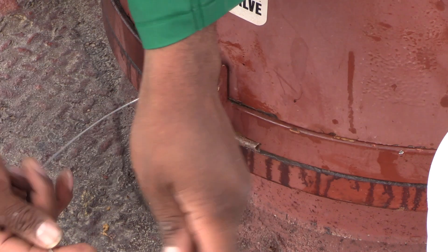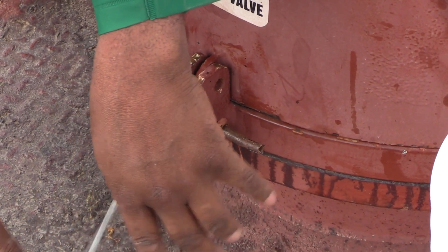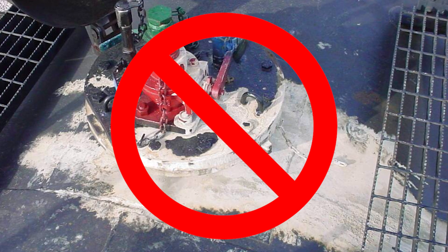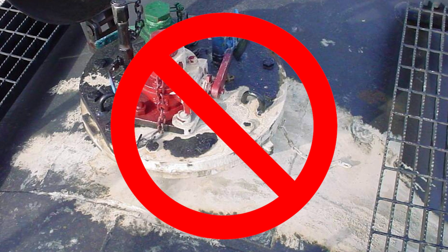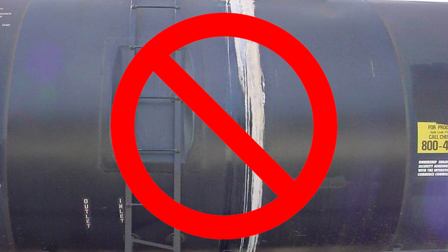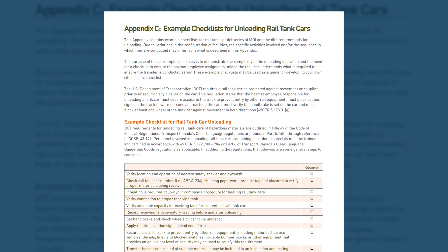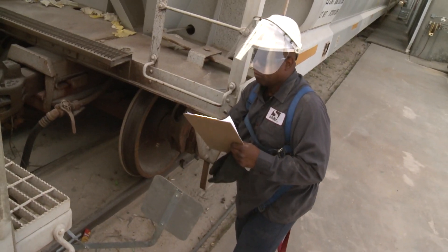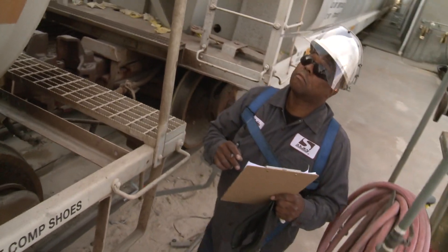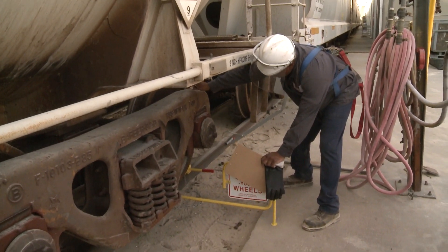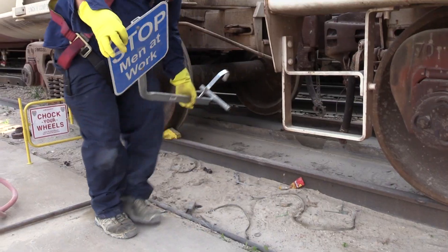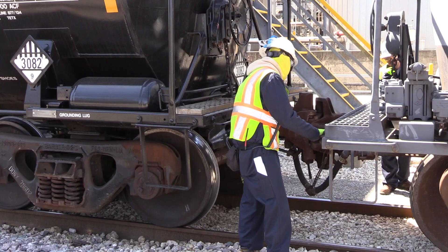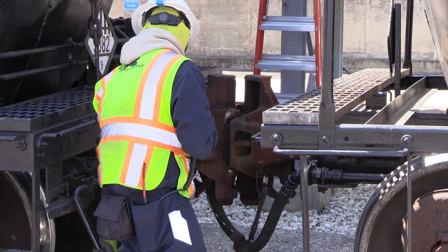Consulte las reglamentaciones estatales y locales sobre material derramado. El Departamento de Transporte de Estados Unidos exige que se quite todo material derramado o residuo de producto de la superficie exterior del carrotanque antes de ofrecerlo para el transporte de regreso. Complete la lista de verificación para asegurarse de que el carrotanque está preparado adecuadamente. Si hay algún defecto que deba corregirse antes de que se pueda devolver el carrotanque, notifique al proveedor. Finalmente, quite las calzas de las llantas, la bandera azul y el descarrilador. Regrese toda la documentación a la oficina receptora y, si no hay defectos, notifique al personal correspondiente que el carrotanque vacío está listo para su regreso.